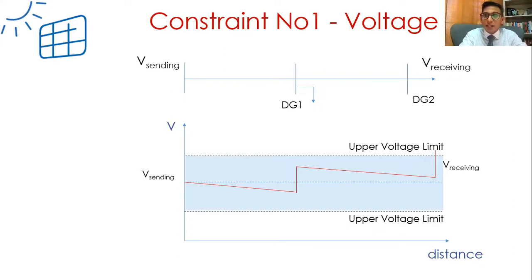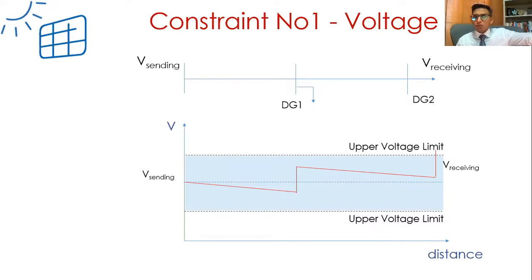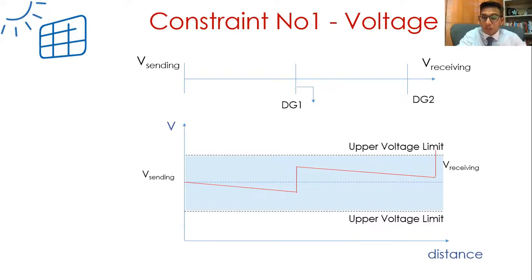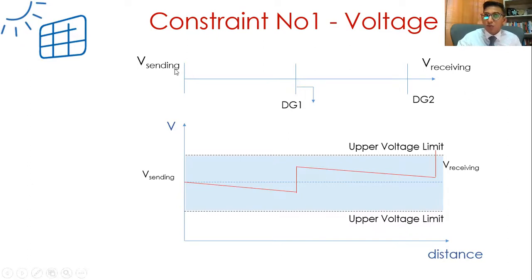Do we have a mechanism to control how much distributed generation is being connected? Maybe your neighbor is just connecting a rooftop system, another one here and there. In your locality, maybe 50 or 70% of people are having distributed generation - it's free. In Mauritius, the government even installs it for you for free through some schemes. So ultimately in the long run, what's going to happen? This is where we need to take care of one of the issues about voltage constraints.